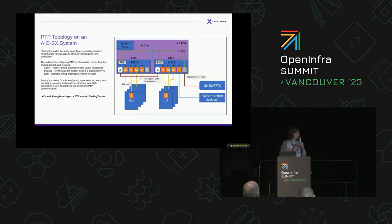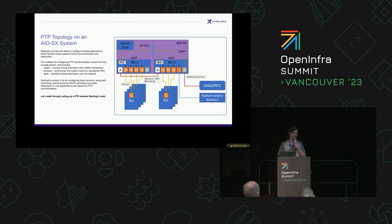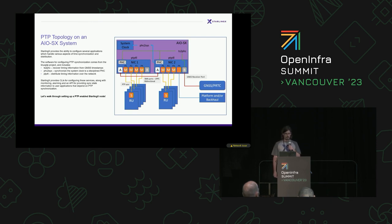There's a lot going on in this topology here. We're going to break it down over the next few slides and kind of build it back up. What you're looking at is a StarlingX simplex all-in-one node with two NICs. In StarlingX, the core of the PTP work all comes from the Linux PTP project, and there are a number of programs in there that work together.